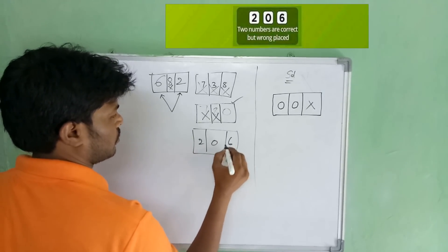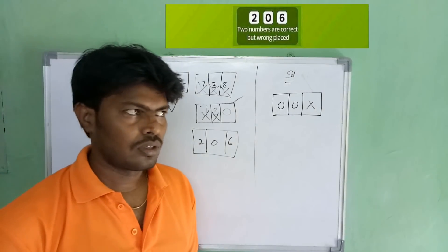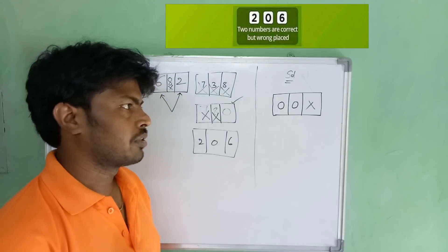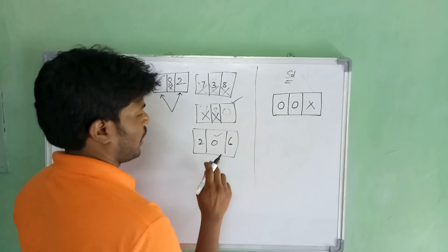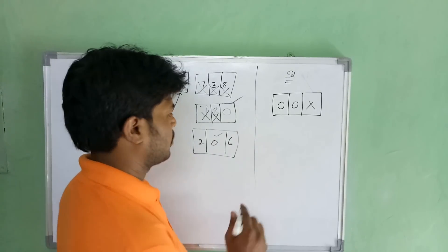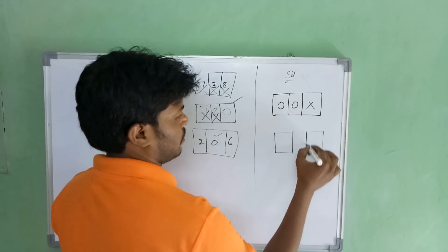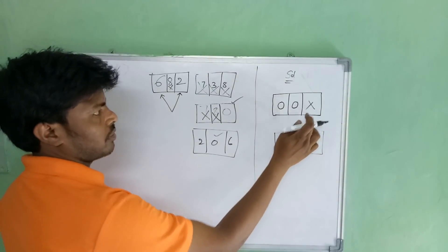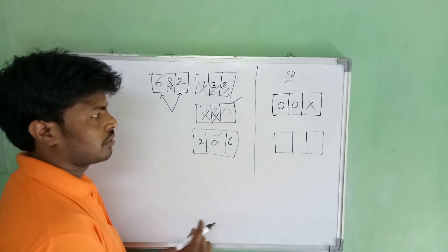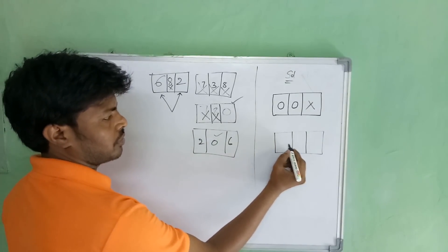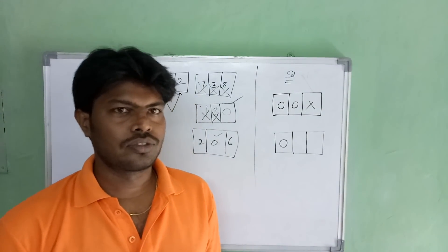For 2-0-6, two numbers are correct but wrongly placed. We know that one of the numbers is zero, and it is wrongly placed. If zero is not here, it should be here or here. Since zero is wrongly placed in this figure, it should definitely be in the first place. Now we have known the position of zero.